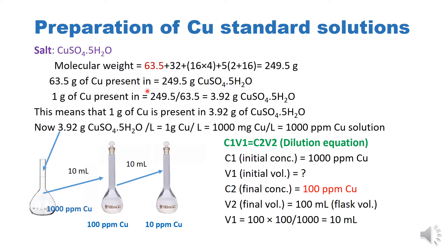Altogether the total molecular weight of copper sulfate pentahydrate is 249.5 grams. So 63.5 grams of copper is present in 249.5 grams. Therefore one gram of copper would be present in 3.92 grams of copper sulfate pentahydrate — we get this value by dividing 249.5 by the atomic weight of copper, 63.5.